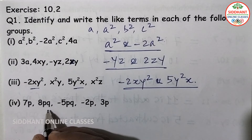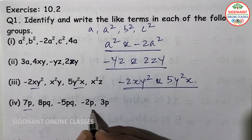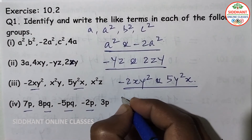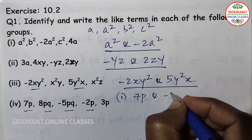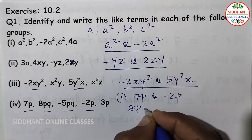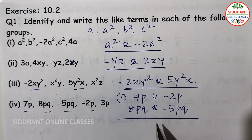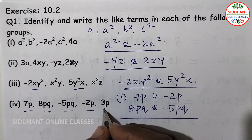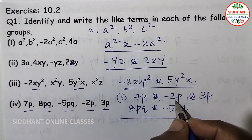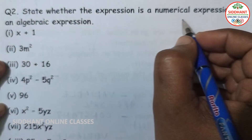Fourth group: 7p, 8pq, minus 5pq, minus 2p, 3p. Here p-terms and pq-terms are like terms. Two pairs exist: first pair is 7p, minus 2p, and 3p; second pair is 8pq and minus 5pq.